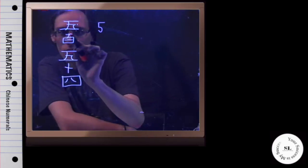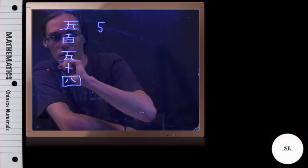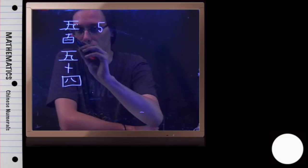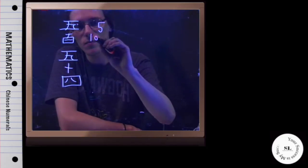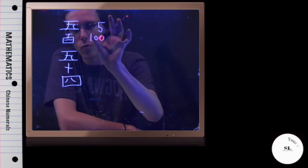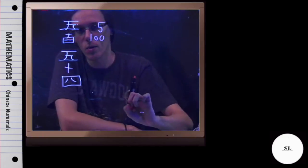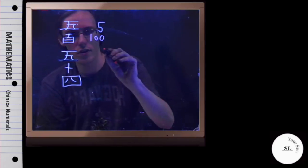This symbol right here, it kind of looks like a little basket with a handle or maybe a TNT box, but this symbol right here is 100, and I'll come to what it means when they're positioned this way in a moment, but I've got 5, 100, another 5.